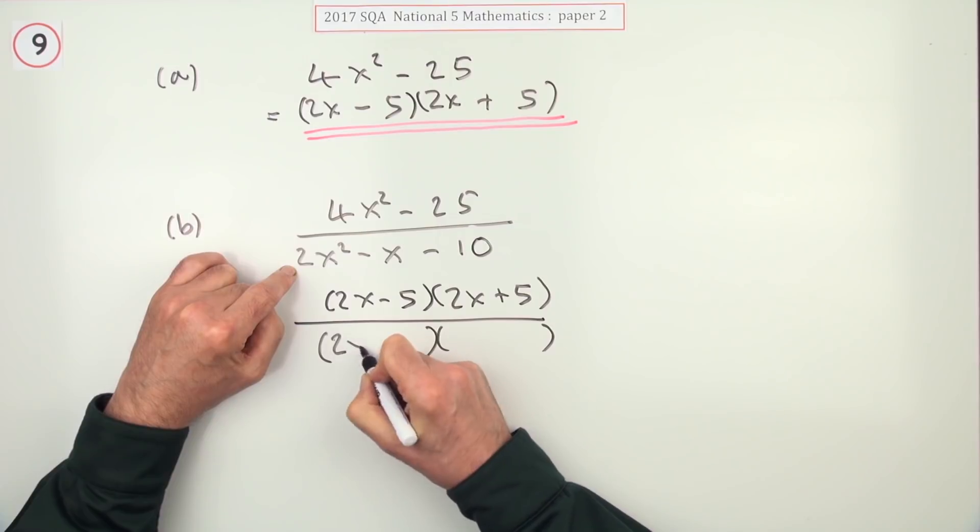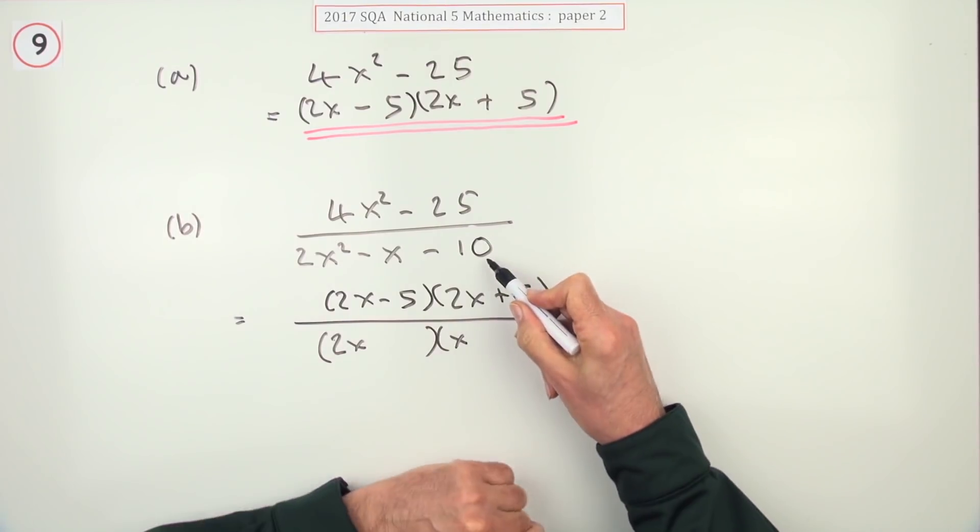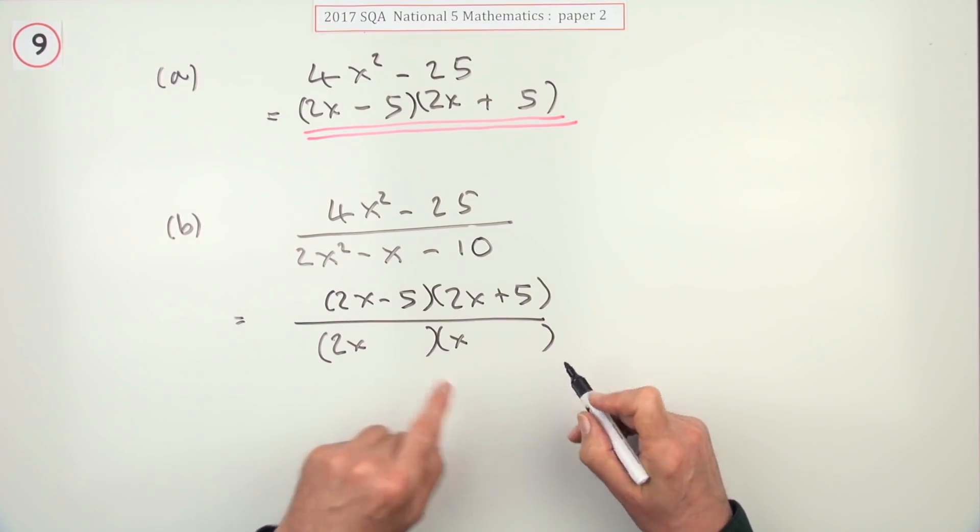So 2x squared can only be 2x times x. 10 could be 1 and 10 or 2 and 5, but it's got to be the 2 and 5 to match this. So it's just a case of where will you put the 2 and where will you put the 5.